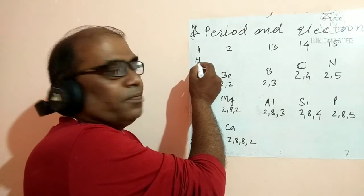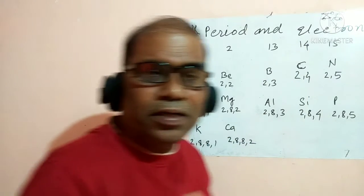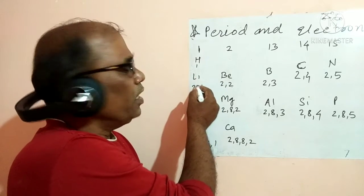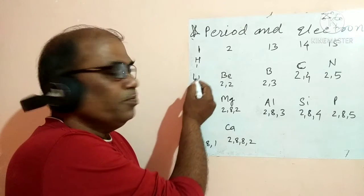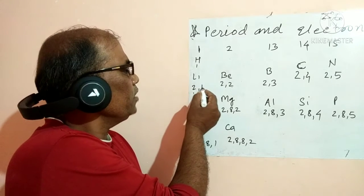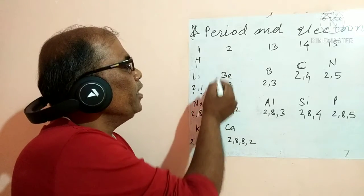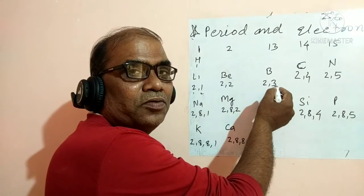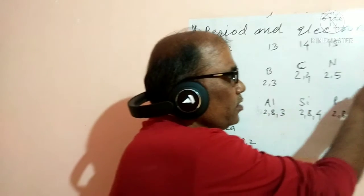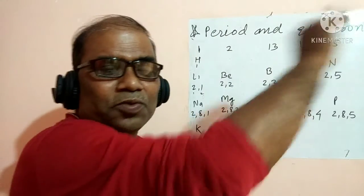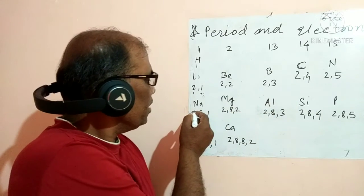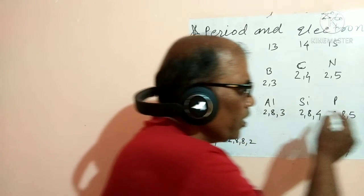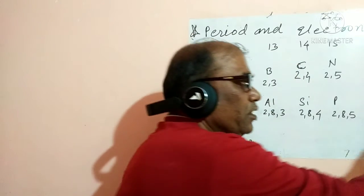Hydrogen has one shell, and helium is also in the first period with one shell — making 2 elements in period 1. From the second period onwards, a new shell is added. When a new shell is added, the third shell is included for elements in period 3.